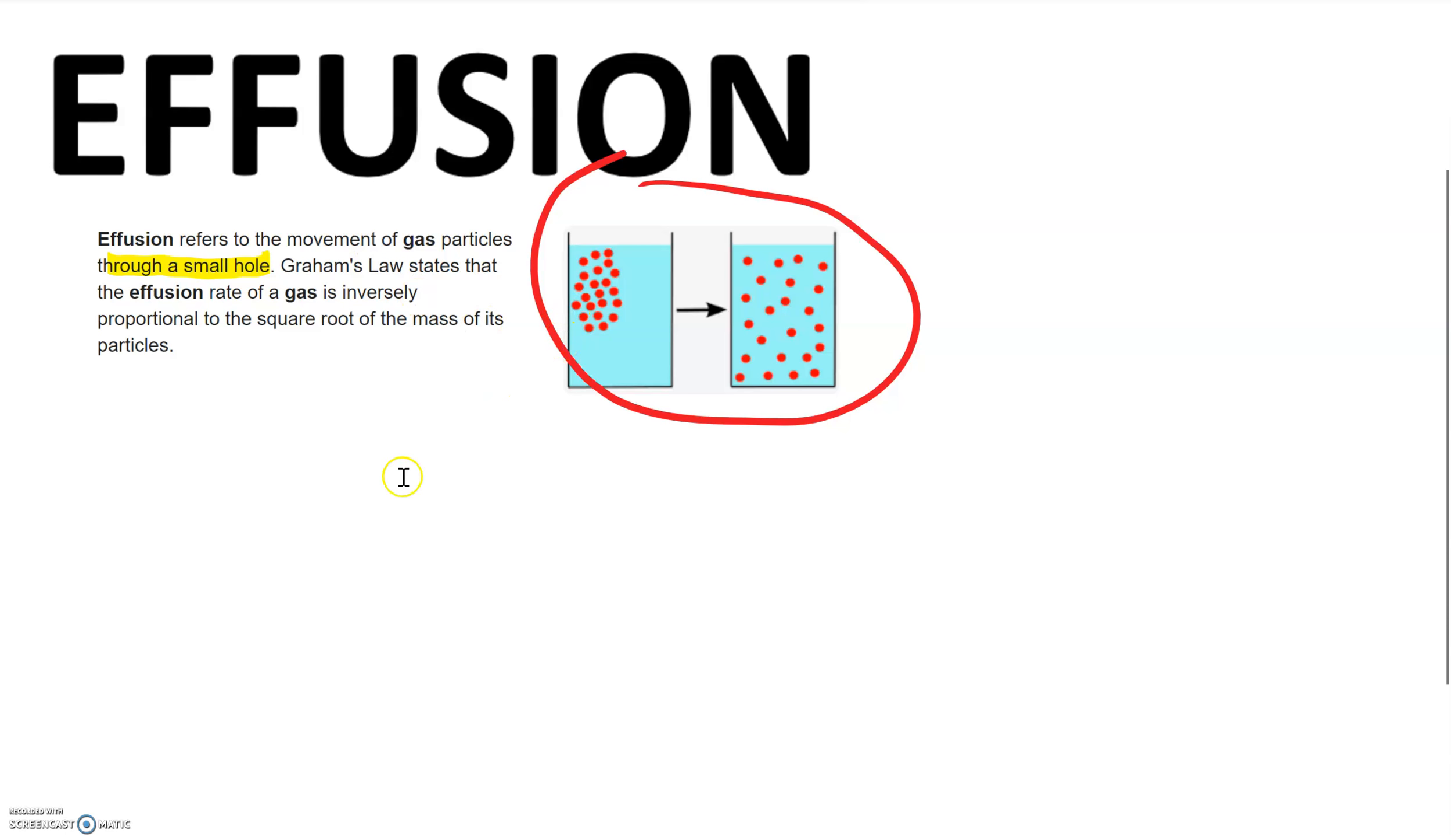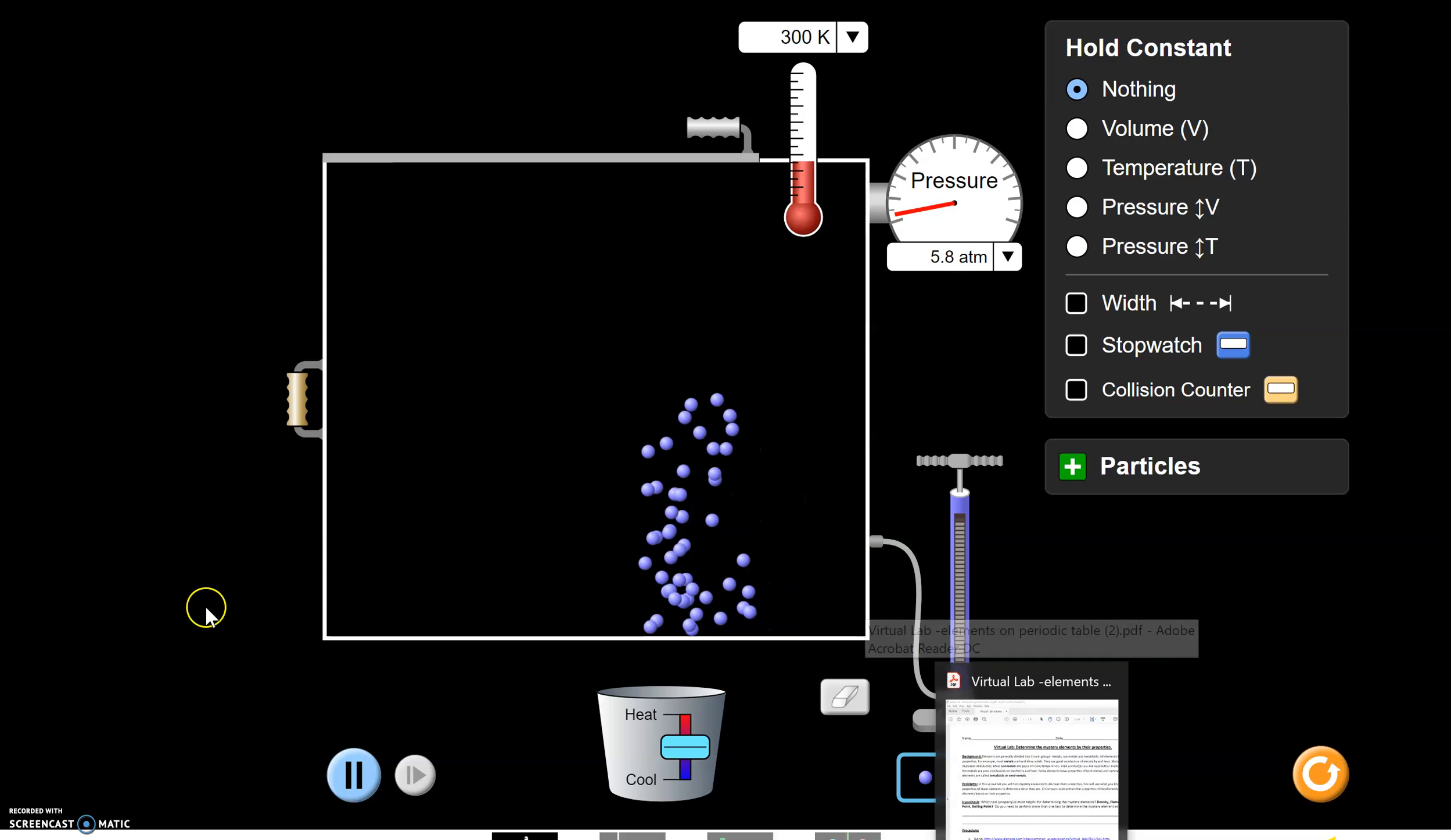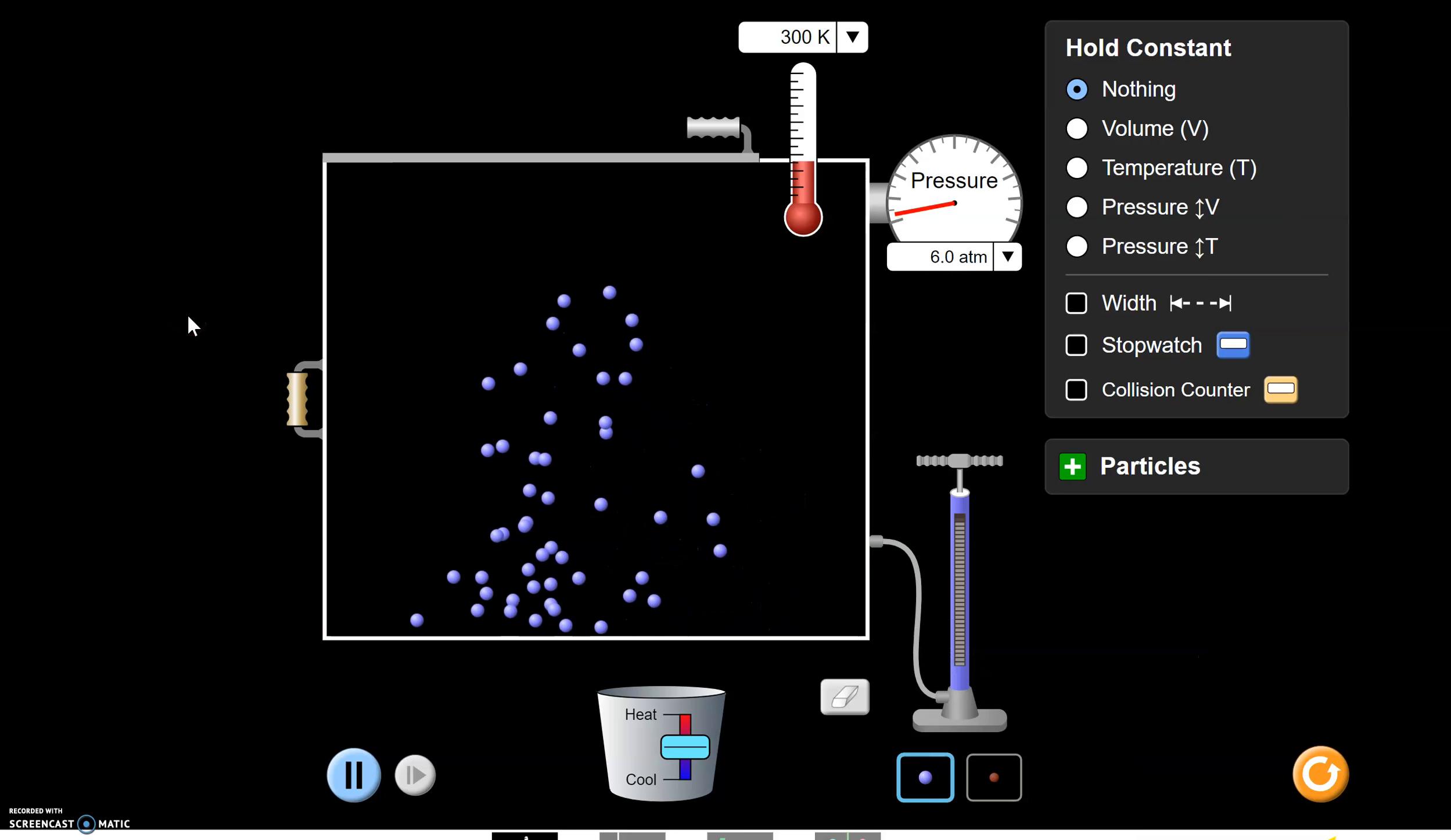And we can show that here because we can use this slider to make a small hole. We'll start with a larger size gas molecule and keep the pressure constant. And obviously they're diffusing at a rate that is relative to the temperature, their kinetic energy, but also their size.